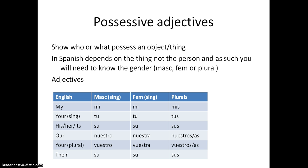This is where we see more of a difference between masculine and feminine. 'Our' is nuestro, nuestra if it's feminine, nuestros if it's masculine or a mixture of masculine and feminine, or nuestras if it's feminine plural. 'Your' plural — so you're talking to more than one person — is vuestro, vuestra for the feminine, vuestros if it's plural and a mixture of masculine and feminine, or vuestras if it's just feminine plural. And then 'their' is sus, sus, sus — just like the his/her/its one.